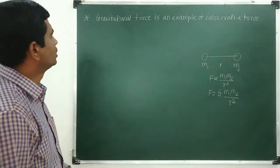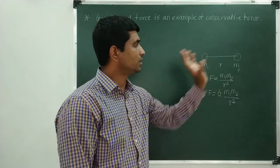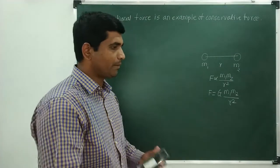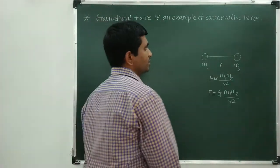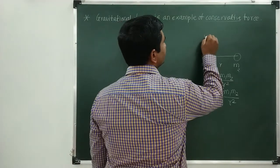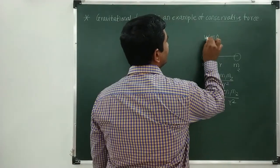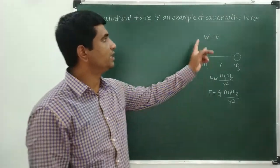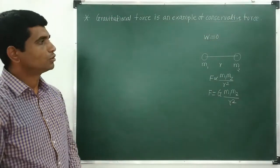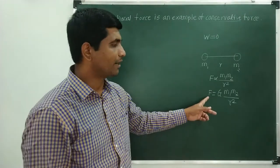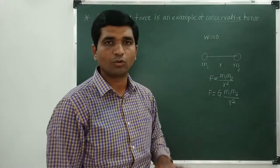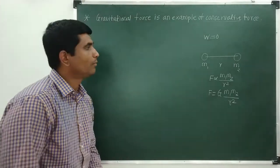In today's lecture we will show that the force due to gravitational interaction is an example of a conservative force. Let me recap what we discussed earlier about conservative force: a force field is called a conservative force field if the work done during the round trip by that force field is equal to zero. We will consider the work done by the gravitational force for an object moving from point A to point B and show that the work done is zero.